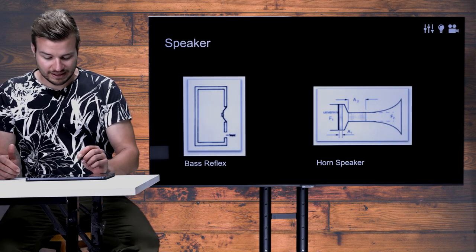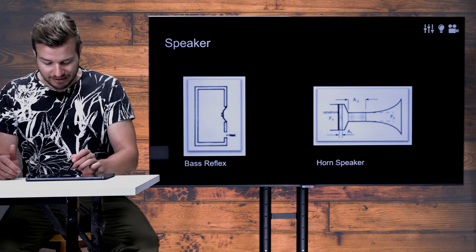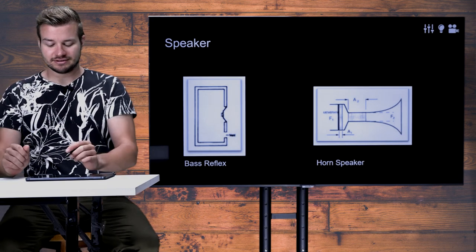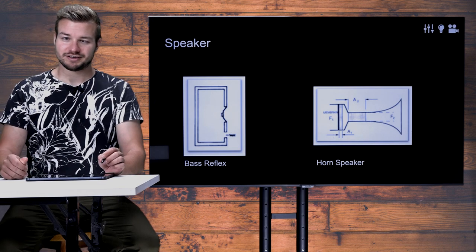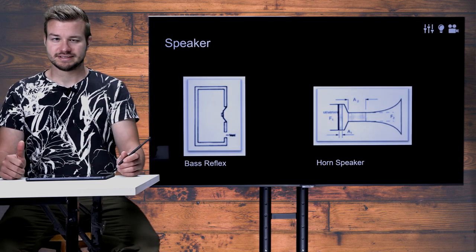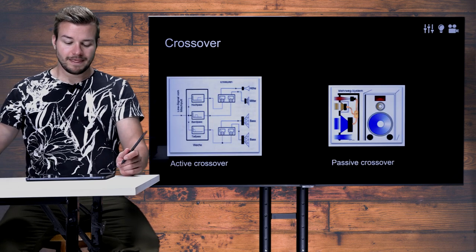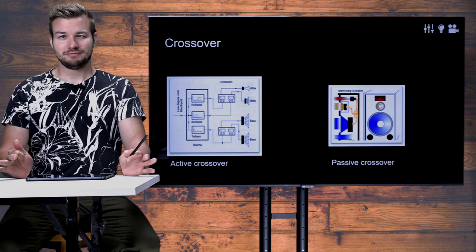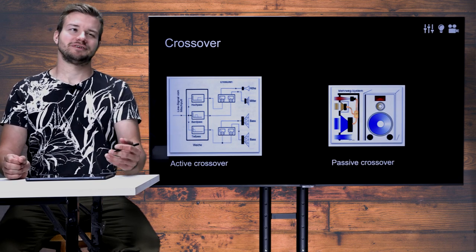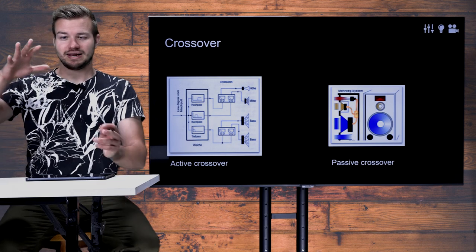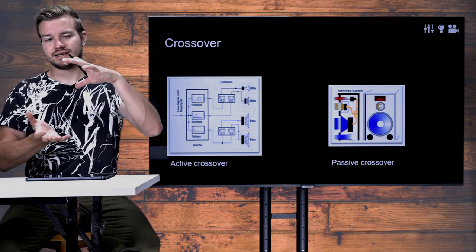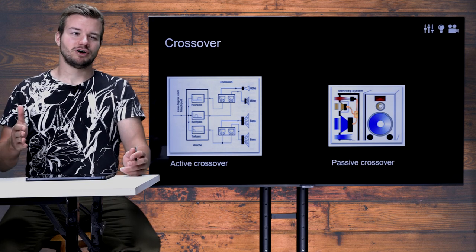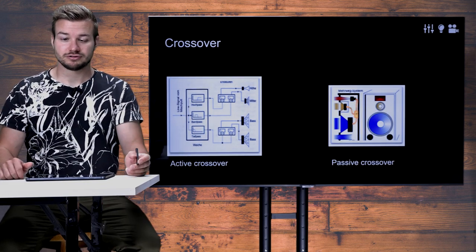The horn speaker works a little differently. The membrane is positioned further back and a horn shape sends the sound out. Horns are always used for higher frequencies — mids, high mids, and highs — never for lows. This leads to the topic of crossover: you may have noticed we always use different speakers and membranes for different frequency ranges. Even a full-range speaker normally has a horn speaker combined with a standard membrane speaker — so there are always multiple membranes within one enclosure.